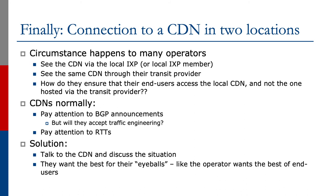Finally, if you're connecting to a CDN in two different locations — which can happen with many operators who see the CDN through the local Internet Exchange Point or via the local Exchange Point member, and also see the same CDN through the transit provider or a regional IXP — how do they ensure that end users access the local CDN and not the one hosted via the transit provider? CDNs normally pay attention to BGP announcements, though there is an open question about whether they will accept traffic engineering or not — some do, some do not. CDNs also normally pay attention to round trip times and often to end-user quality, measuring how the end user is accessing their data. The solution is always to talk to the CDN and discuss the situation, as they want the best for their end users just as the operator does.